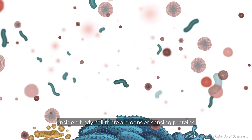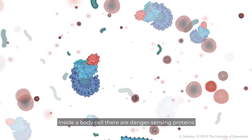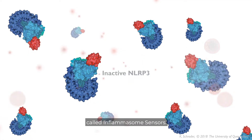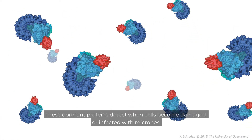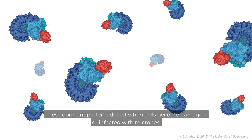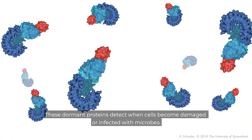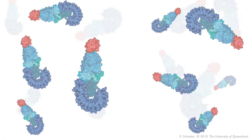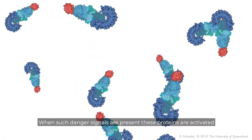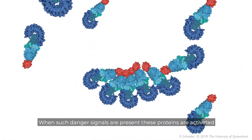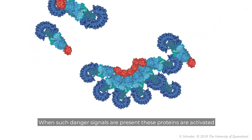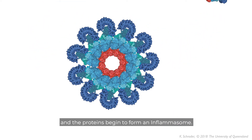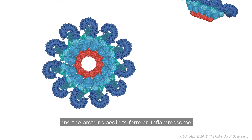Inside a body cell, there are danger sensing proteins called inflammasome sensors. These dormant proteins detect when cells become damaged or infected with microbes. When such danger signals are present, these proteins are activated and begin to form an inflammasome.